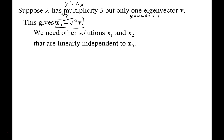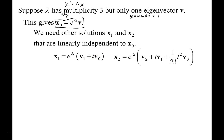You take the one eigenvalue and eigenvector you have — that makes up one part of your solution. We're going to need two other solutions, x1 and x2, that are linearly independent to x0. We've seen how to build x1: we make it e^(λt) times v1 plus t times v0. Now the next step is to get a second linearly independent generalized eigenvector solution, where we add on an extra part.